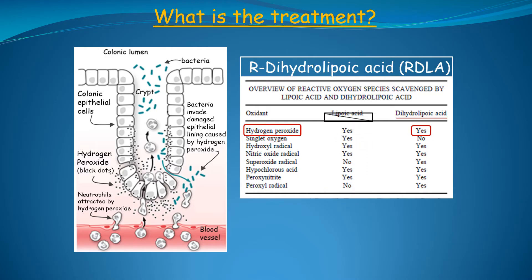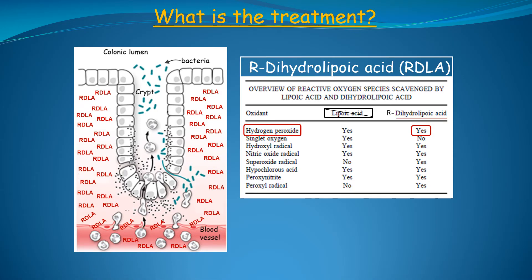Lipoic acid is converted to the reduced dihydro form in the body, and this conversion can worsen ulcerative colitis, so it should not be used. The R-form of dihydrolipoic acid is the preferred biologically active form. RDLA is taken orally and is absorbed into the bloodstream. From there, it is secreted from the capillaries into the extracellular space, where it eliminates extracellular hydrogen peroxide. Without hydrogen peroxide to attract neutrophils into the colonic epithelium, there is no further inflammation, and since neutrophils only live for a few hours to a couple of days, the colitis will slowly resolve within several days. This has been called induction of remission.